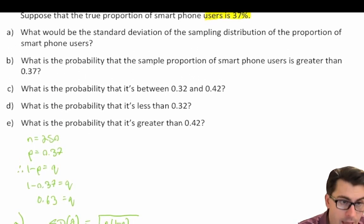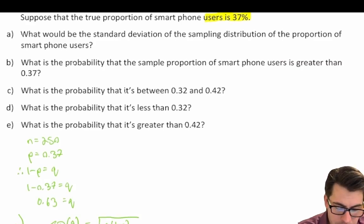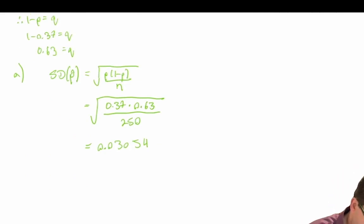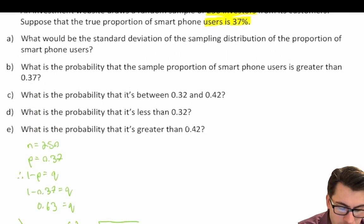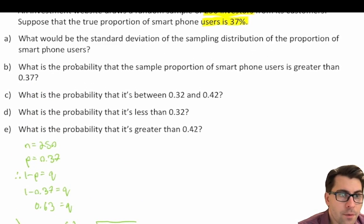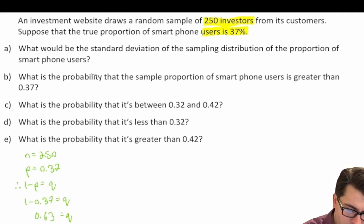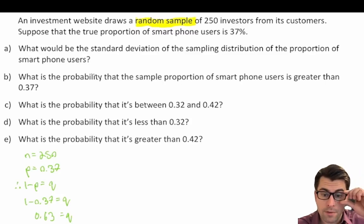We have done Part A. Part B asks: what is the probability that the sample proportion of smartphone users is greater than 0.37? Let's check whether we can assume a normal distribution. We're told we have a random sample, so we'll assume independence, and we'll assume a large enough sample size. Our respondents have been randomized.